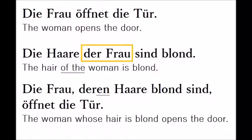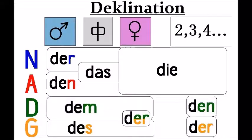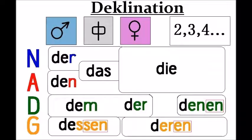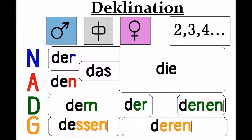Let's look at the declination table. These are the normal articles. Now let's compare them to the relative pronouns. I marked the differences with a red box around the changes. The dative plural is different, the genitive masculine and neuter is different, and the feminine and plural genitive is different. All the others are the same.